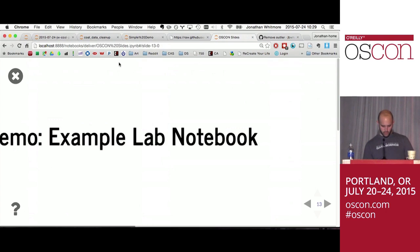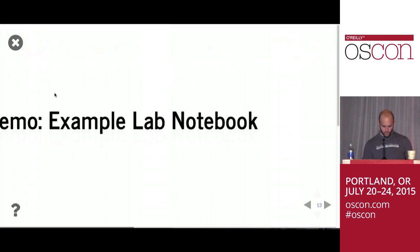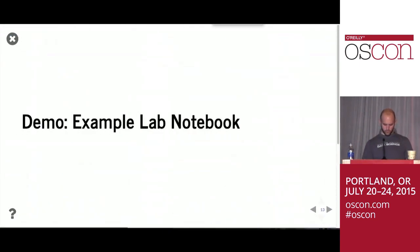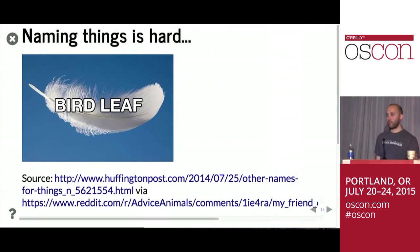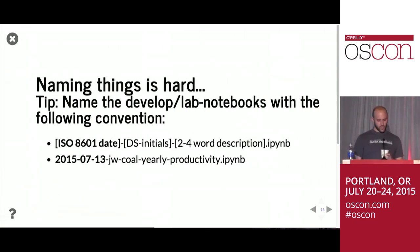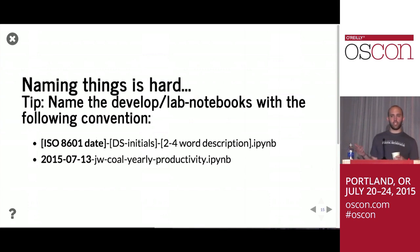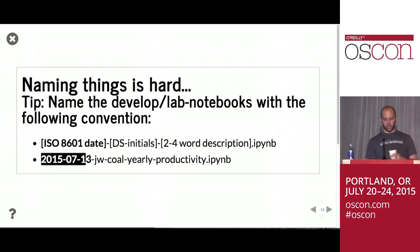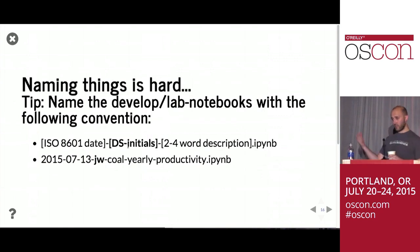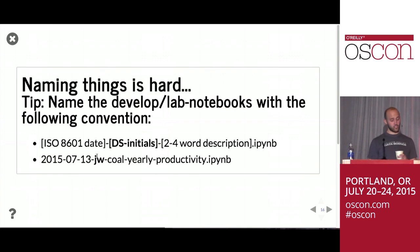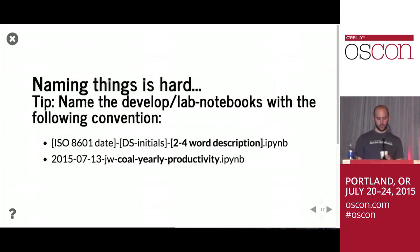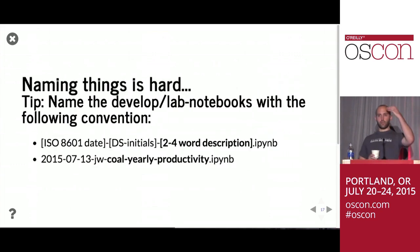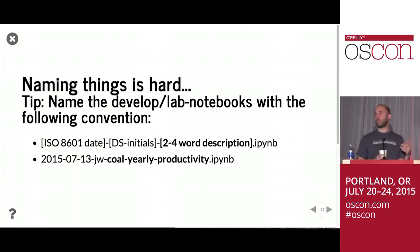Naming things is a known difficult problem. For development/lab notebooks, I recommend this naming convention: start with an ISO 8601 date (e.g., 2015-07-24), then the data scientist's initials (e.g., JW), then a two-to-four word description of what you're working on — for example, 'coal-yearly-productivity.' This makes it easy to sort and filter by date, by user, or by the analysis topic, if names are consistent.